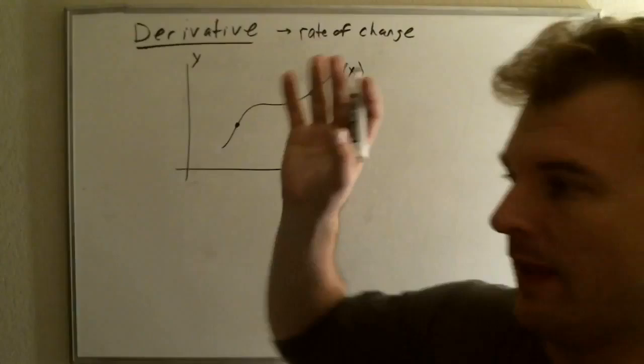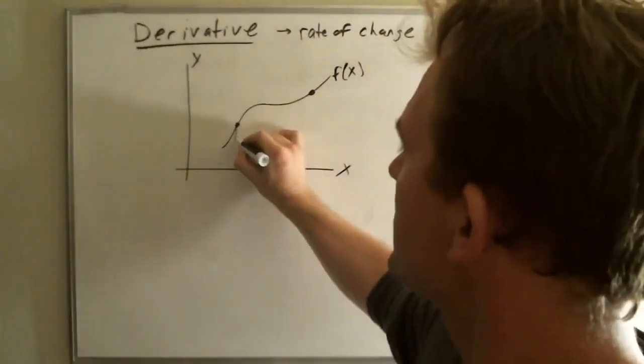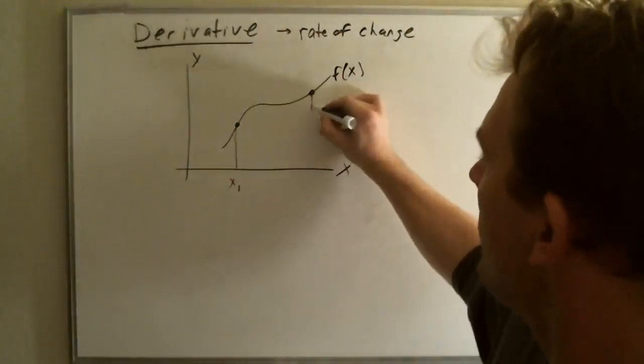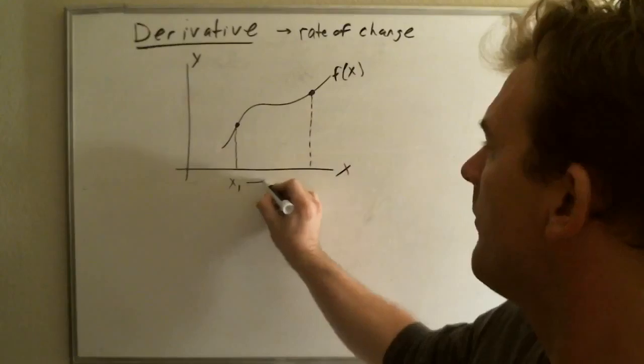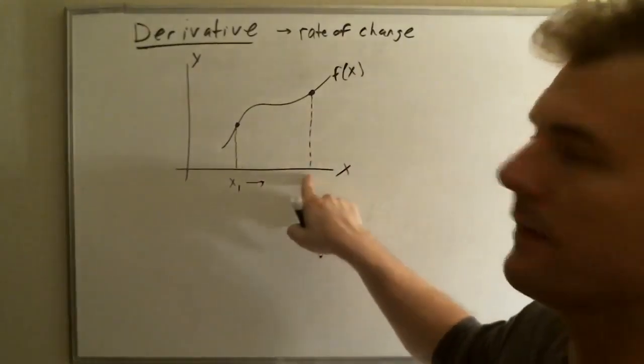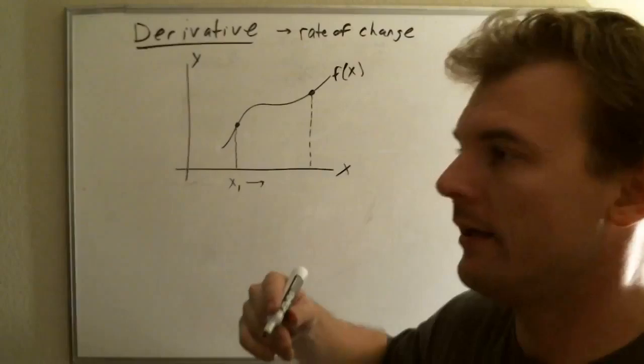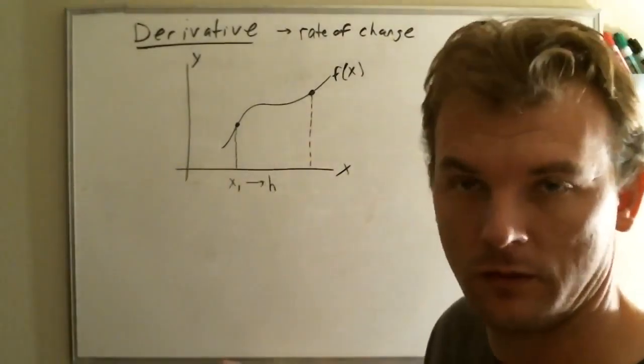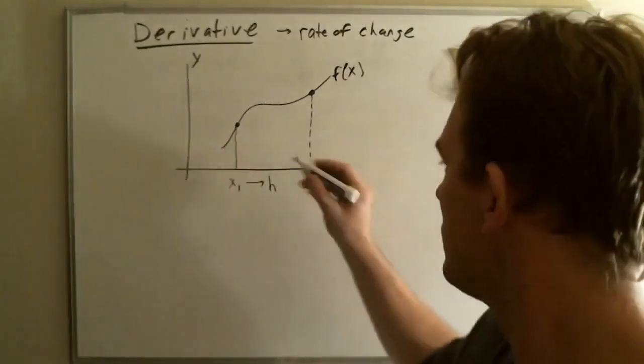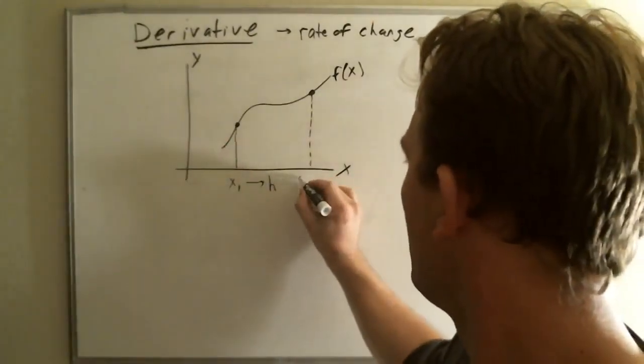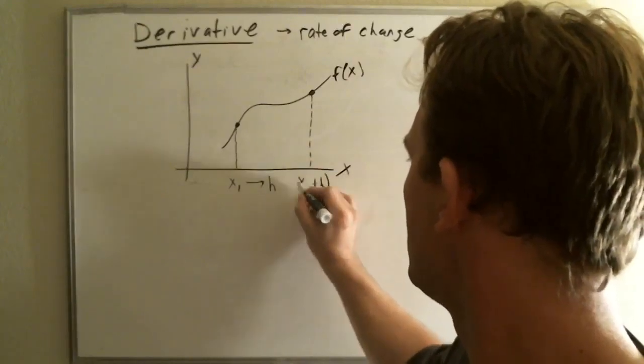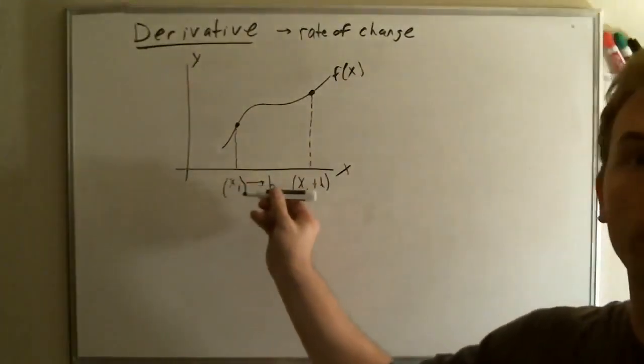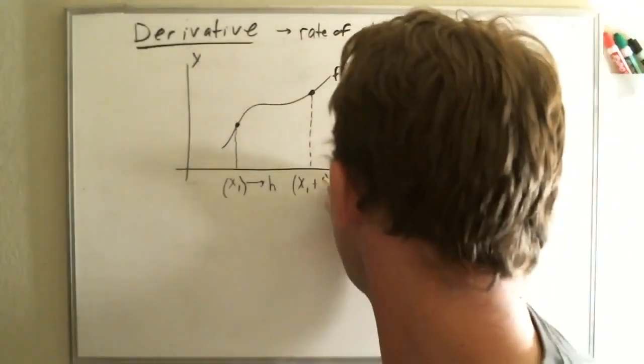But really, calculus is taking that a little step further. So, let's call this guy here x1. And let's call this guy over here, to get from this x1 to this x, let's say x2, we want to move a little bit. We want to move h over. And h represents a movement. So, this point is going to be x1 plus h, because you're moving some h over to a different location.